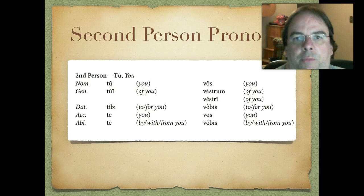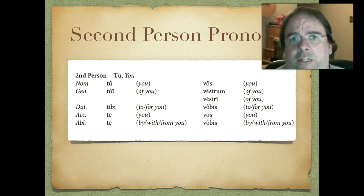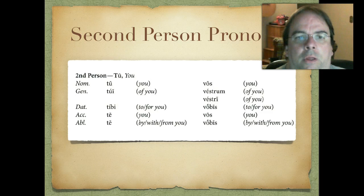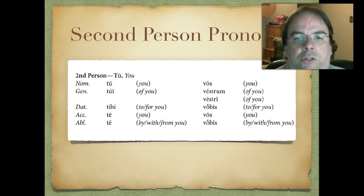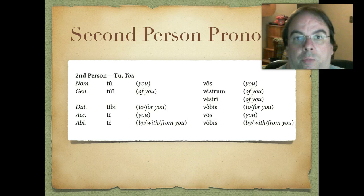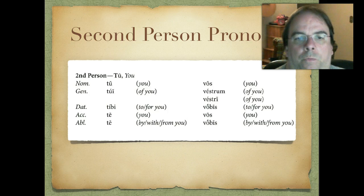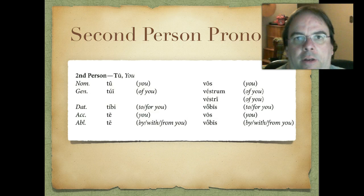Let's take a look at the second person personal pronouns. If you've taken Spanish or Italian, these are going to look very familiar. We have separate singular and plural, which makes it a little bit easier to tell the difference. Nominative singular, tu, you. Genitive would be tui, of you. Dative singular, tibi, to or for you. Accusative singular, te, you. And ablative singular, also te, by, with, or from you.